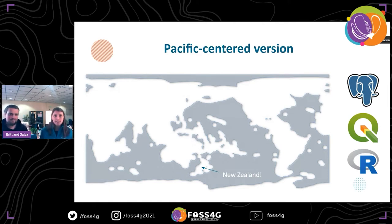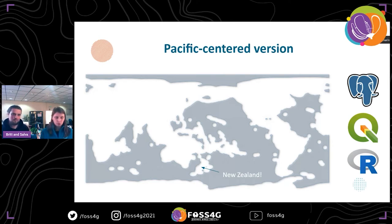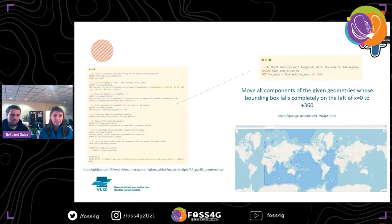Creating a Pacific-centered version of our products is something we already did for the exclusive economic zones and some of the other products. But we also did it for the high seas — and the new thing was that we tried to do it not only with our old workflow in R, but also with PostGIS and using QGIS. So we have three different ways to get to the same results. Let me go briefly through them, because it's very easy for you to use the same approach on your own products. If you see anything in the code that you think could be improved, please let us know, because we're always looking to improve our data.